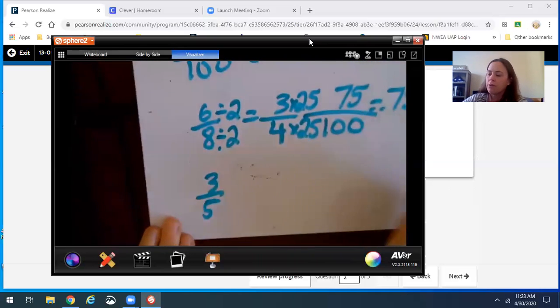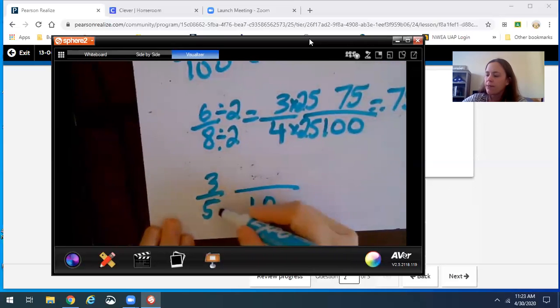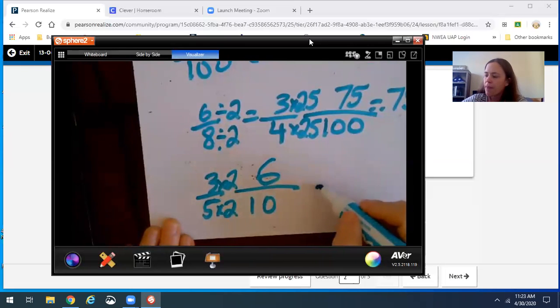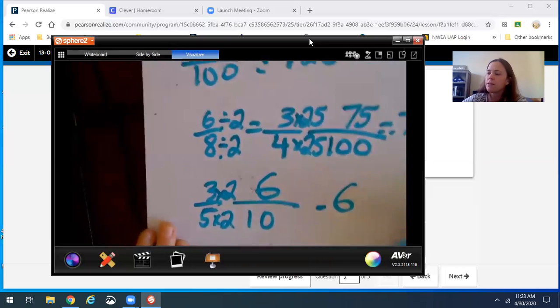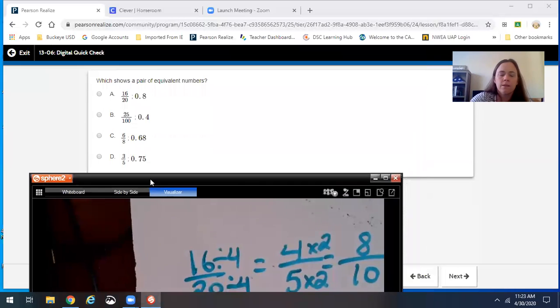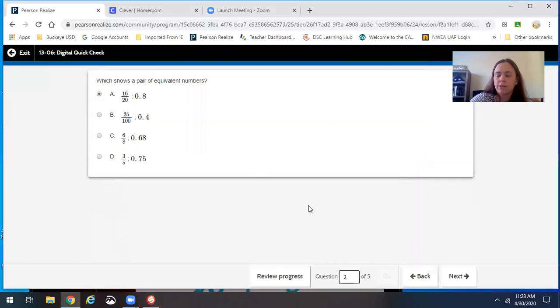Last one down here, 3 fifths, make it have a 10, so you actually have to go and do all of these to figure out the answer, which I know takes time. So this is .6 tenths, so now we can go back and see what our choices are. So, 16 twentieths is the same actually right here, so we're lucky because this is actually the right answer.